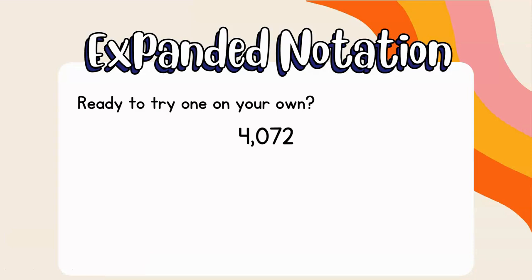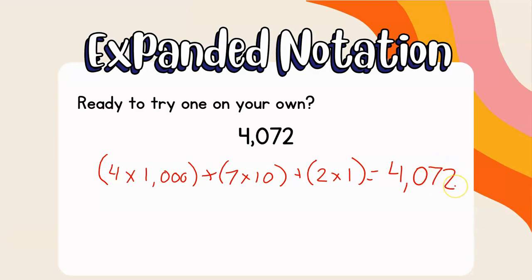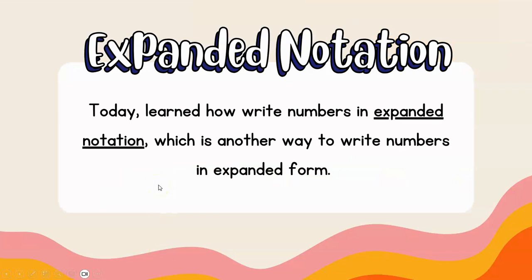Here's a tricky one — a little bit difficult, so go ahead and pause. The 4 is in the thousands place: (4 times 1,000). Now you'll notice there's a 0 in the hundreds place. If you ever have a 0 like that, you don't need to write anything, because 0 times any number is 0 — so we skip over that. We move right to the tens place: (7 times 10), plus (2 times 1) in the ones place, equals 4,072.